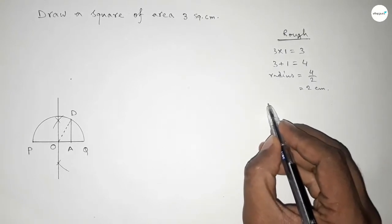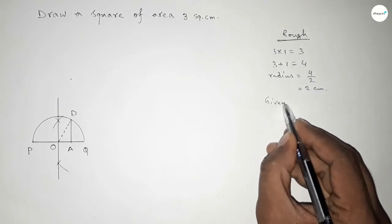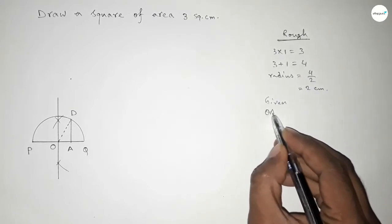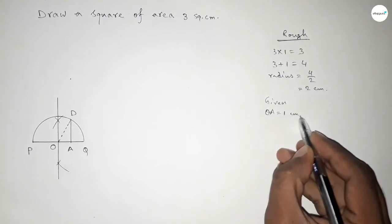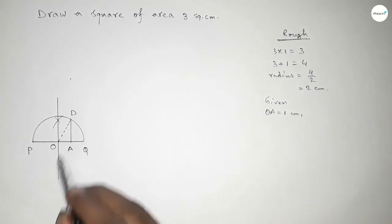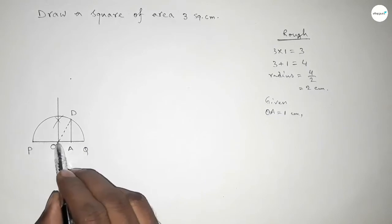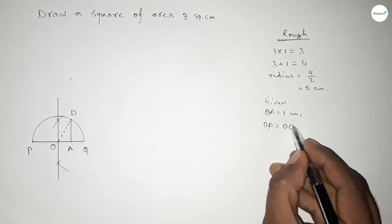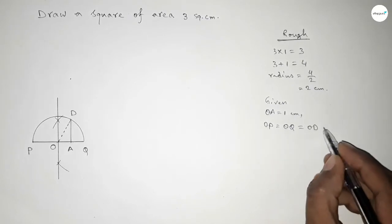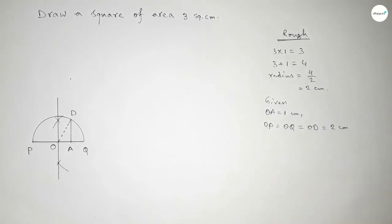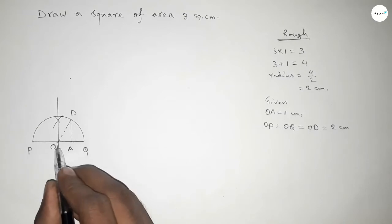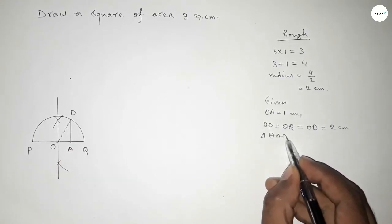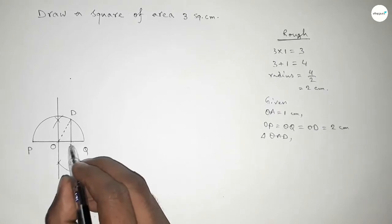Now roughly discussing the calculation. Given OA equals 1 centimeter. The radii OP, OQ, and OD are all equal to 2 centimeters. From right angle triangle OAD, we need to find AD.